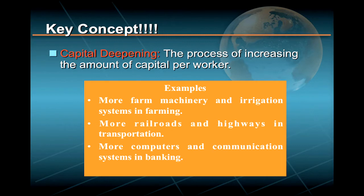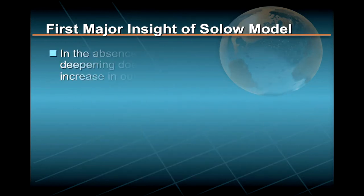In each of these industries, societies have invested heavily in capital goods, and as a result, the output per worker has grown enormously in farming, transportation, and banking.